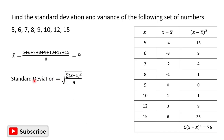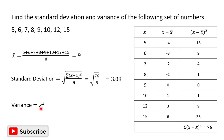We can now find the standard deviation: the square root of sigma (x minus the mean) squared, which is 76, divided by 8 gives us 3.08. The variance is equal to the standard deviation squared — 3.08 squared is 9.49. So the standard deviation is 3.08 and the variance is 9.49.